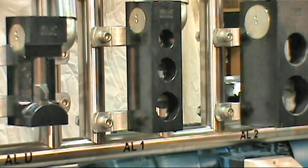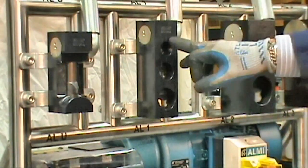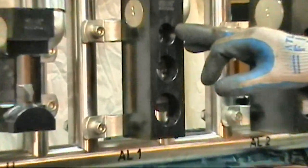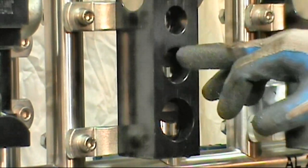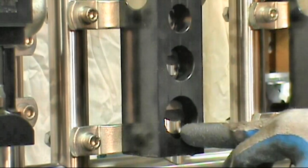The AL-1 is a wall mount tube and pipe notcher, notching tube and pipe at 90 degrees with standard diameters of three quarter inch, one inch, and one and one quarter inch.